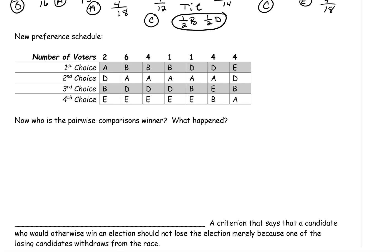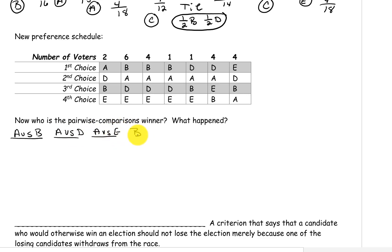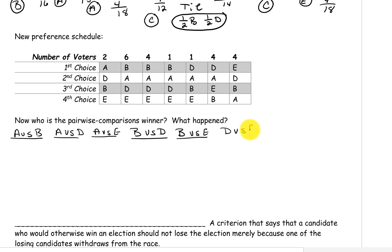Let's continue pairing up these candidates. We'll have A versus B — C is no longer in the election — then A versus D and A versus E. Now pair candidate B up with everybody. B has already been paired with A, and C is no longer in the election, so it would be B versus D and B versus E. Since candidate C is no longer in the election, we move on to candidate D, and our last pairing would be D versus E.